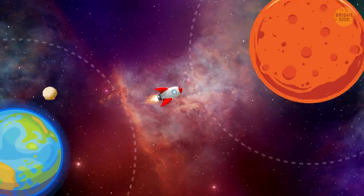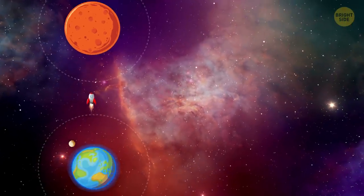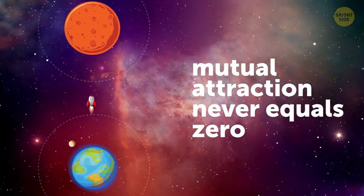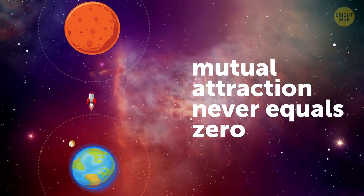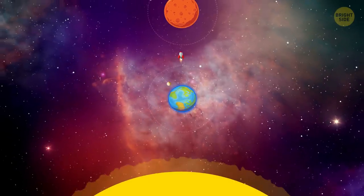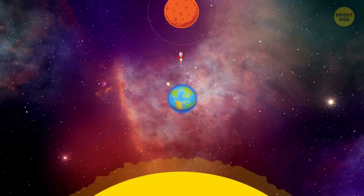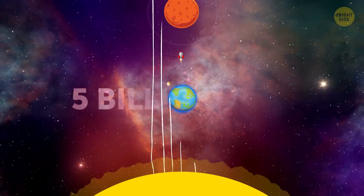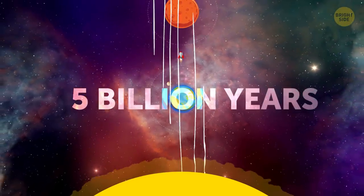But no matter how far the bodies get from each other, their mutual attraction never equals zero. The Earth falls down to the Sun the same way the ISS falls on Earth. But since its lateral velocity is big enough, it's been doing this for 5 billion years.